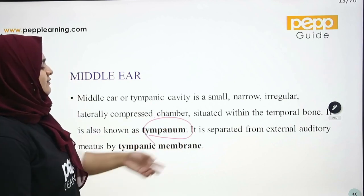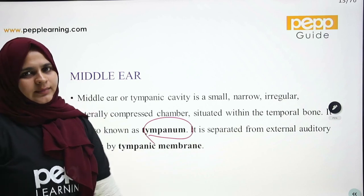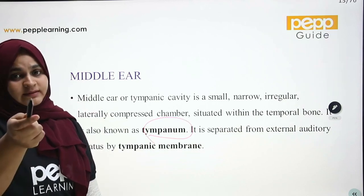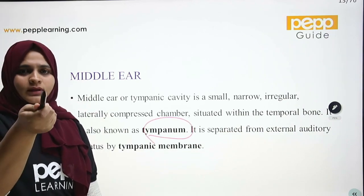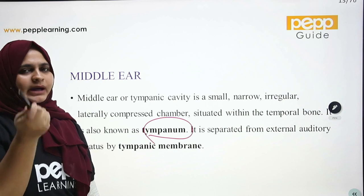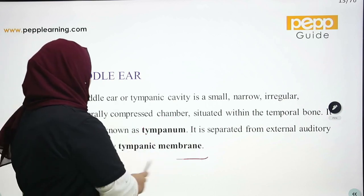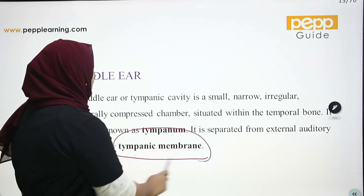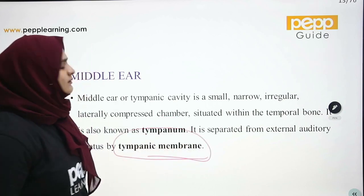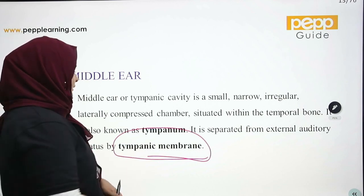The middle ear is separated from the external auditory meatus by the tympanic membrane.